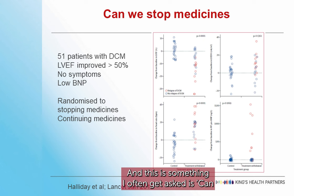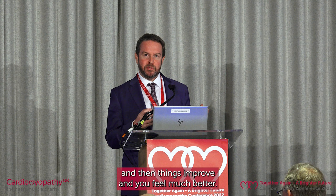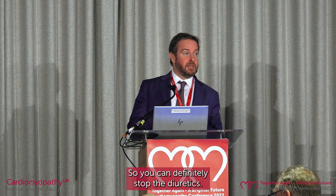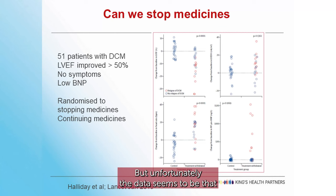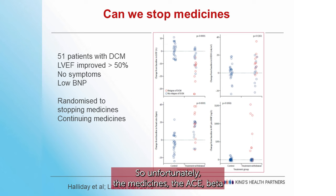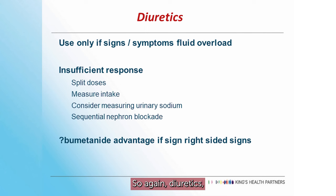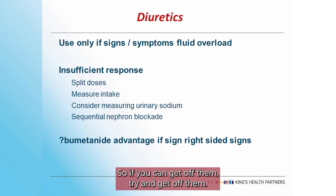A common question is: can we stop the medicines? You start on the medicines, things improve, and you feel much better. You can definitely stop the diuretics. But unfortunately the data seems to show that if you stop the ACE inhibitor or beta blockers, there's a reasonable chance things will get worse again. So the ACE inhibitors and beta blockers are a long-term treatment, I'm afraid. If you're well and off diuretics, try to get off them — all they do is drop your blood pressure, affect your kidneys, give you gout. But if you are getting quite a bit of swelling and oedema, using a combination is most effective: rather than massive doses of furosemide, often adding a thiazide — metolazone or bendroflumethiazide — with eplerenone gives a much better response.